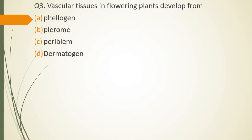Question No. 3: Vascular tissue in flowering plants developed from Phelogen, Phelorome, Periblim, Dermatogen. Vascular tissue in flowering plants developed from? The correct answer is option B Phelorome.